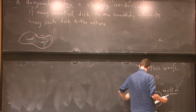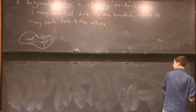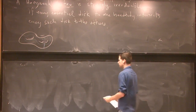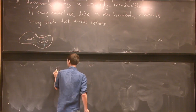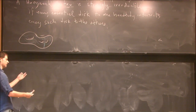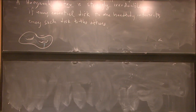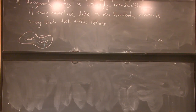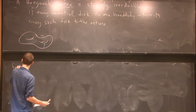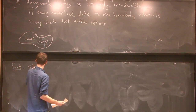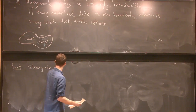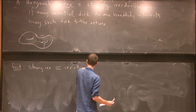Let me explain some basic facts about strong irreducibility and give examples. First fact: strongly irreducible splittings are irreducible, except for one case — the genus-one splitting of S³ — which is strongly reducible but technically arises from the genus-zero splitting by adding a trivial handle. So we always carry this one proviso.